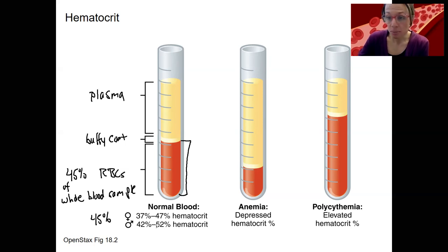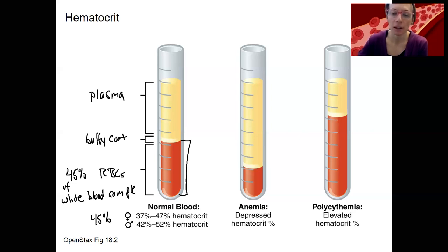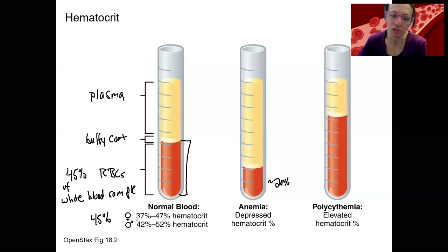If you have anemia — the inability to carry as much oxygen due to low red blood cell levels and therefore low hemoglobin levels — hematocrit will be lower, under the normal ranges. You could estimate about 20% in an anemic case. Basically, you could be mildly anemic if you're anything under the normal ranges, though being just slightly under may or may not be clinically concerning.